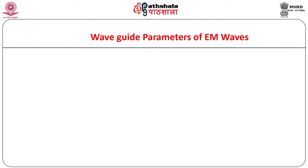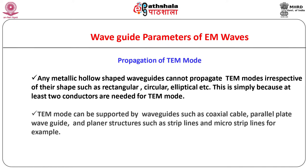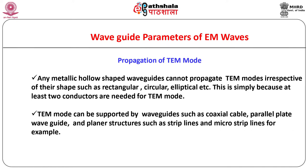Can any mode of propagation pass through any type of waveguide? No, it is not the case. Any metallic hollow-shaped waveguide — irrespective of shape such as rectangular, circular, or elliptical — cannot propagate TEM modes. This is simply because at least two conductors are needed for a TEM mode. TEM mode can be supported by waveguides such as coaxial cable, parallel plate waveguide, and planar structures such as striplines and microstriplines.